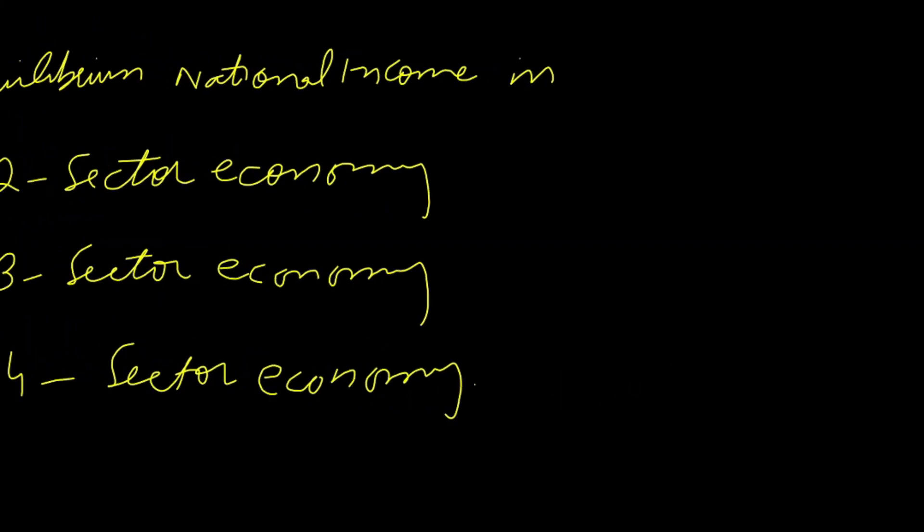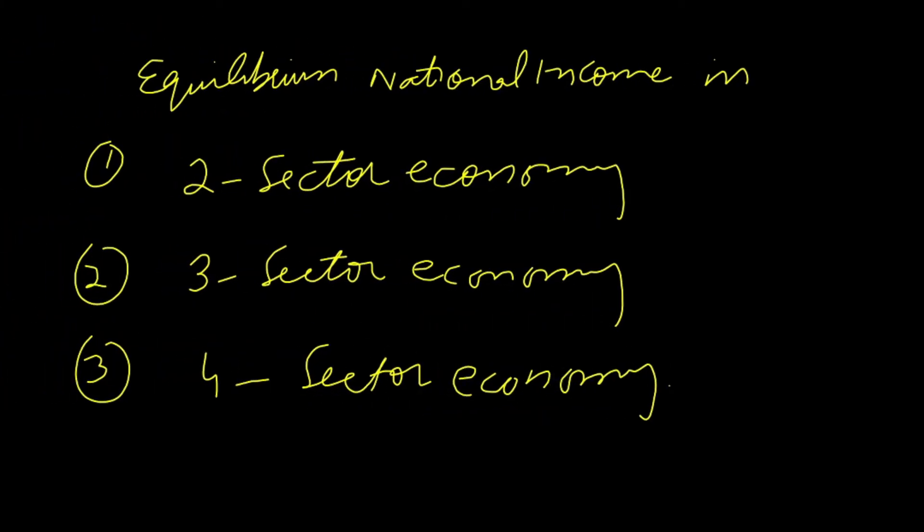A two sector economy is a type of economy in which there are two economic agents including households and firms. A three sector economy includes households, firms, and the government. A four sector economy includes households, firms, government, as well as international trade, that is exports minus imports.